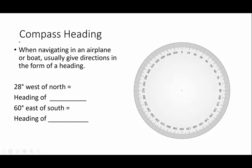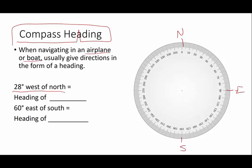Sometimes, when you are navigating in airplanes or on a boat or orienteering or walking in the woods, you don't give directions as 28 degrees west of north. It's too cumbersome. So what pilots and boaters do is they actually use a compass heading. And in a compass, north is 0, east is 90, south is 180, west is 270.